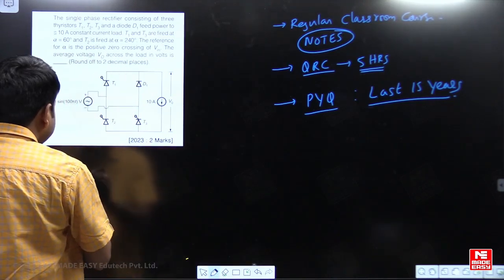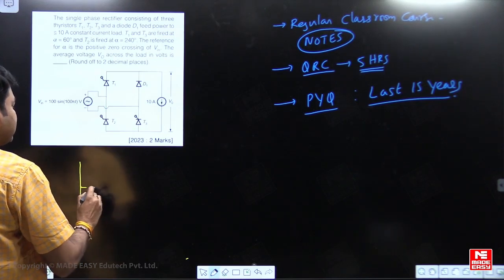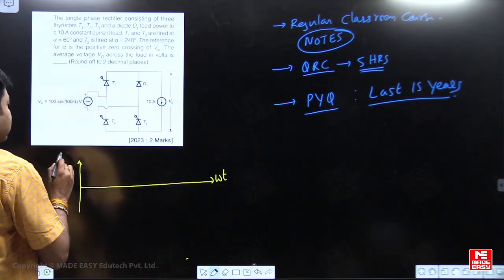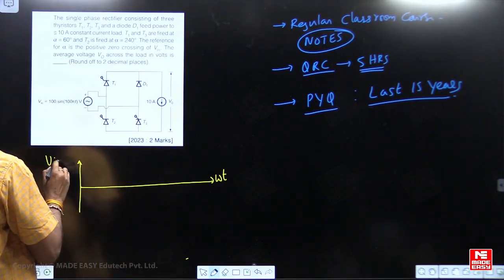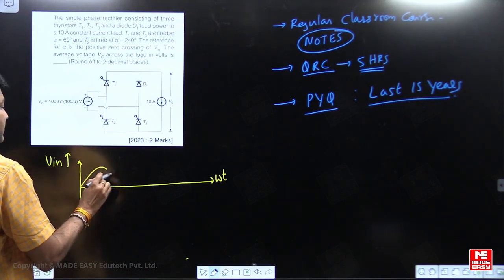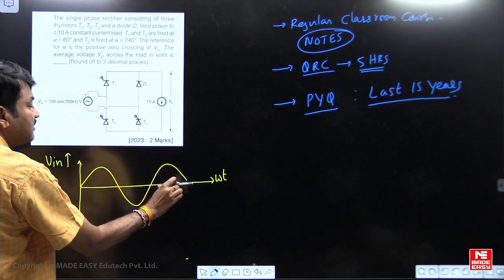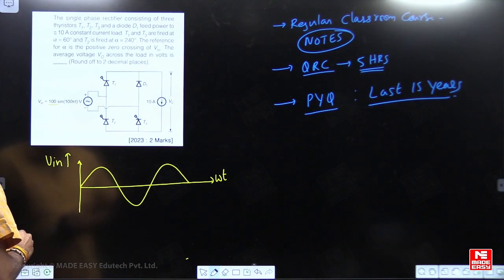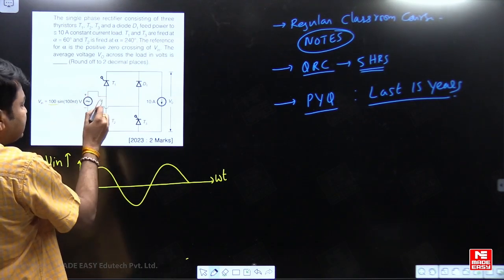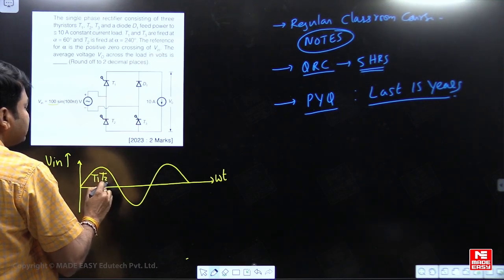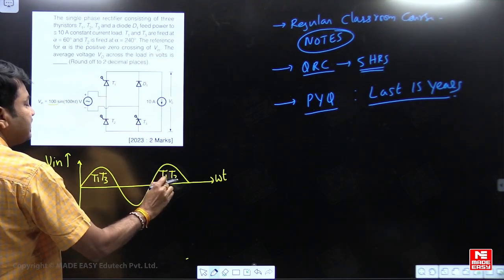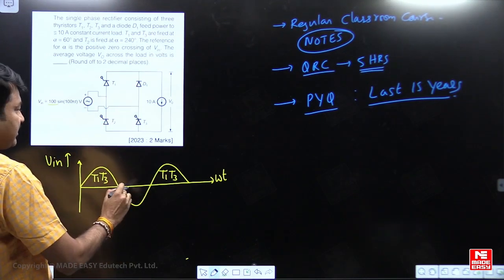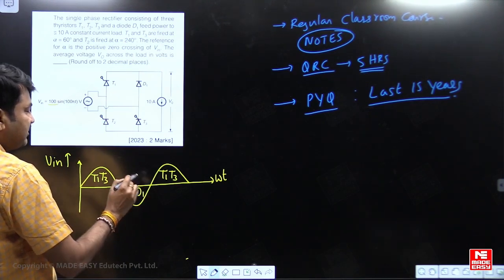Now we have to understand the waveform for output voltage. The input voltage of the source is sinusoidal with a peak voltage of 100 volts. In all positive cycles, T1 and T3 are forward biased.